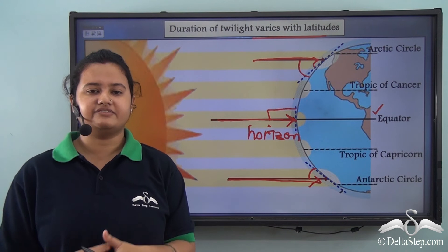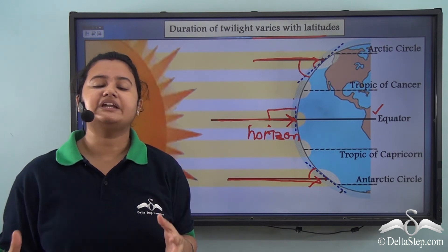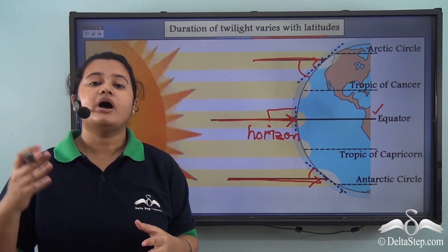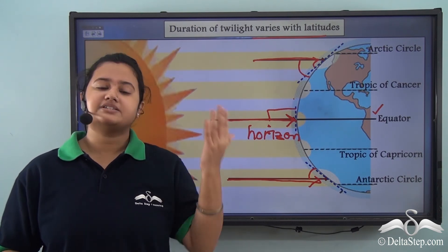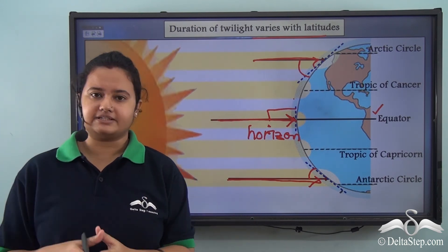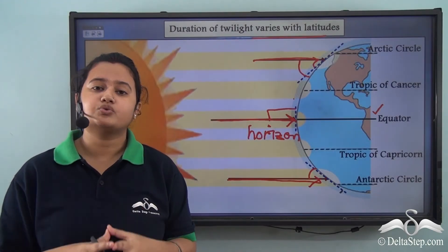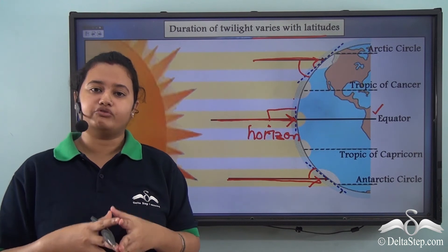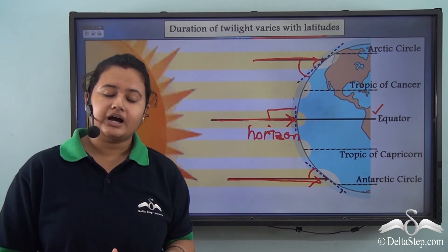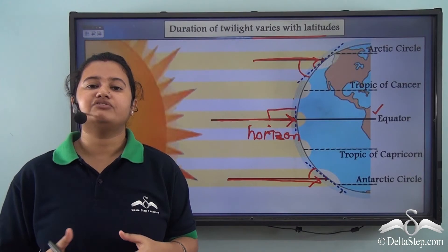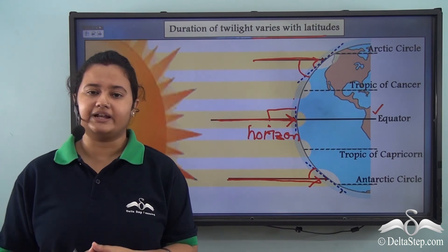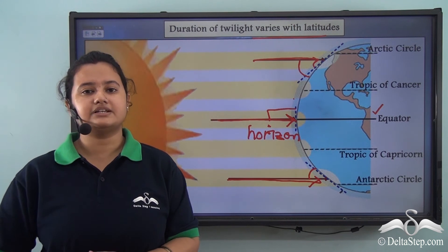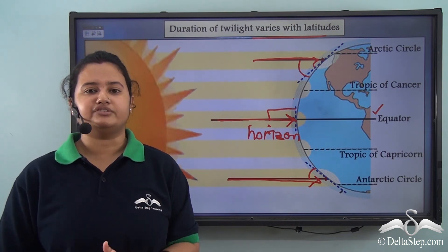In today's video we understood the meaning of twilight. Twilight refers to the period of partial light before sunrise and after sunset. We also understood how twilight occurs, learnt about different phases of twilight — that is golden hour and blue hour — and finally we learnt that the duration of twilight varies with latitudes. In our next video we will discuss about the revolution of the earth.